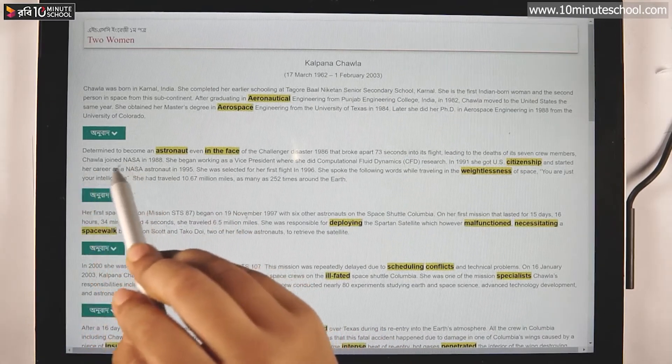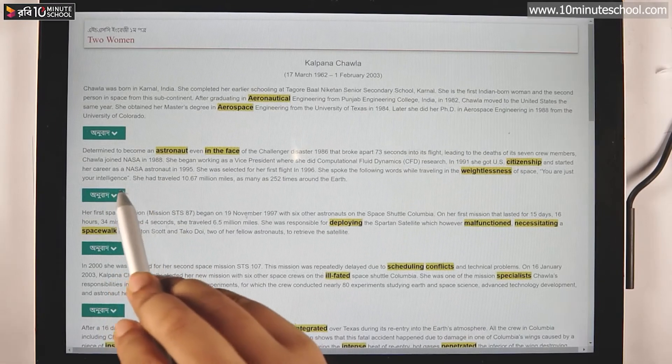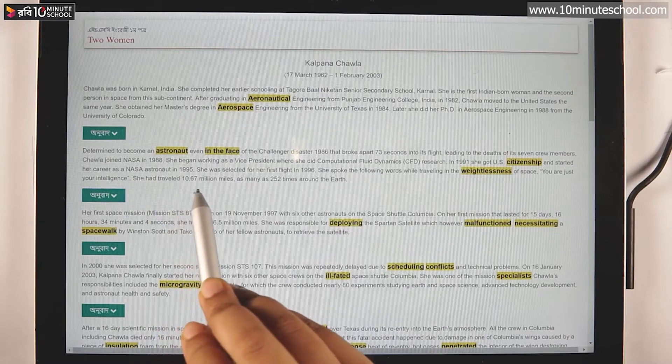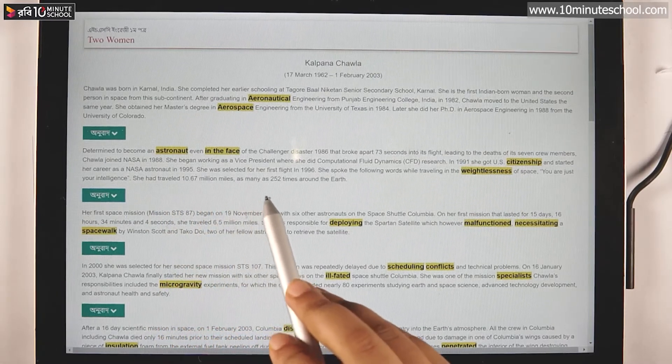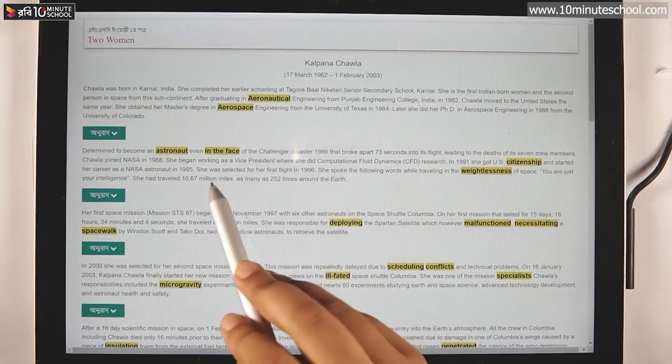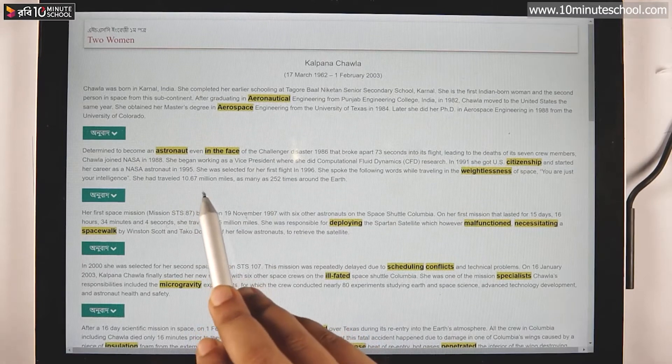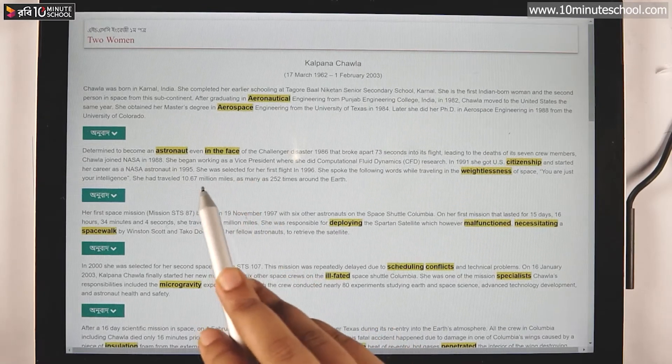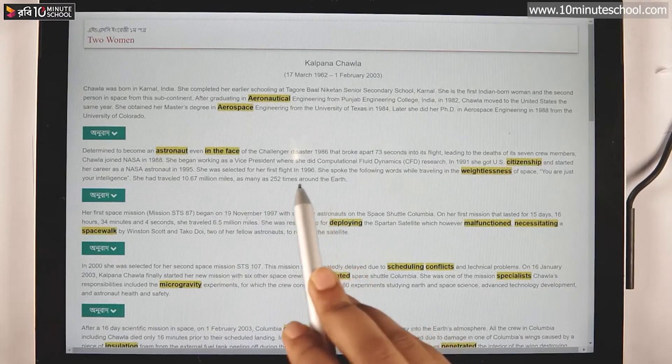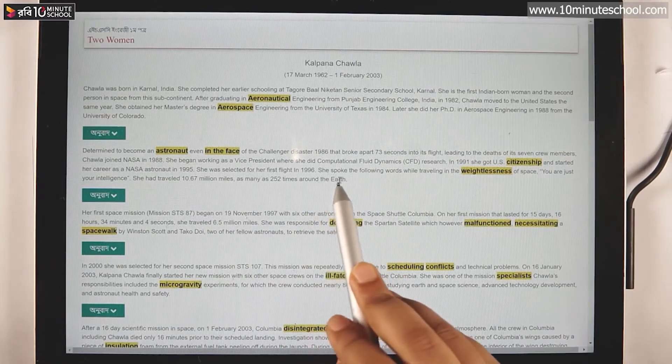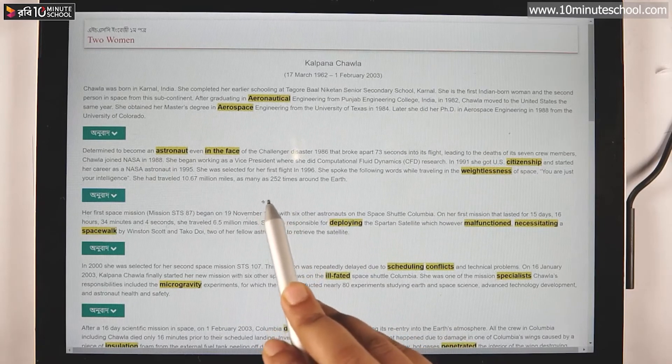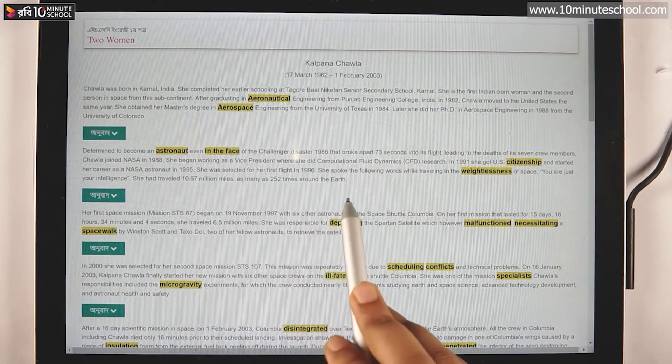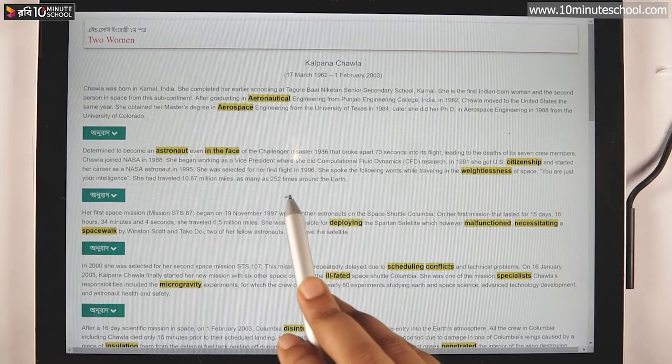She had traveled 10.67 million miles, as many as 252 times around the earth. That's what you are doing. You have to write about this.